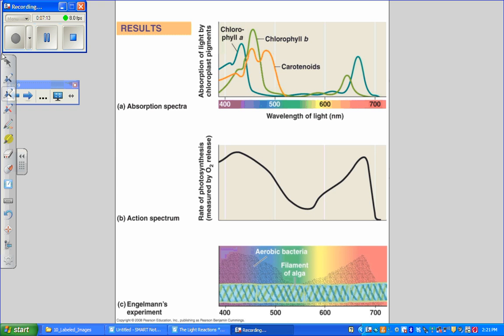There are also accessory pigments which broaden the range of absorbed light able to stimulate photosynthesis and also protect the photosynthetic molecules from reactive forms of oxygen.